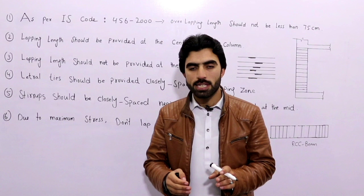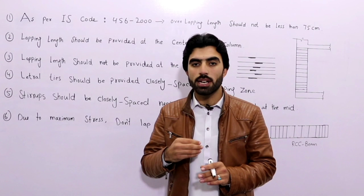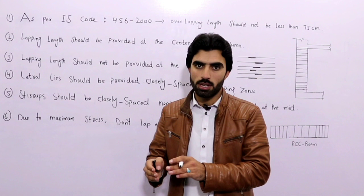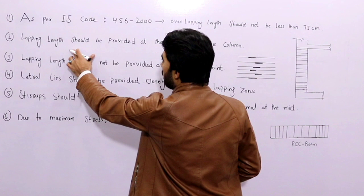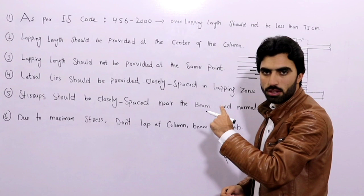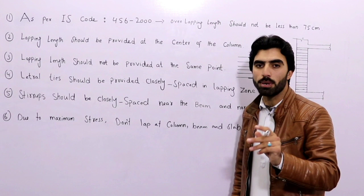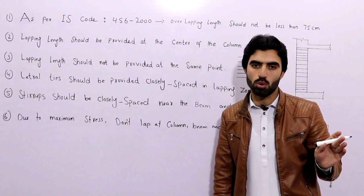The second point is also about lapping length. Many civil engineers and students provide lapping length at the end of the supports, but that is 100% wrong. We have to provide lapping length at the center of the column, because the bending moment is zero at the center. In slab also, you have to provide lapping length at the center — it should not be provided at the end of the supports.